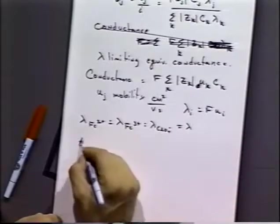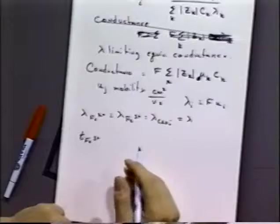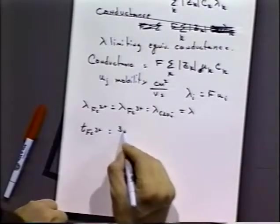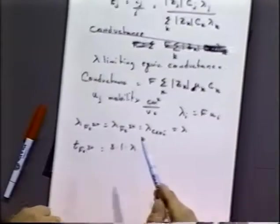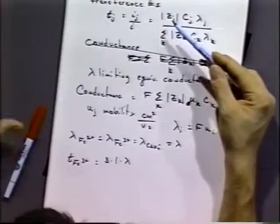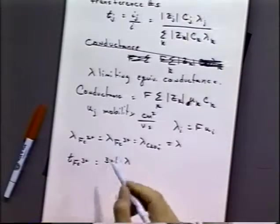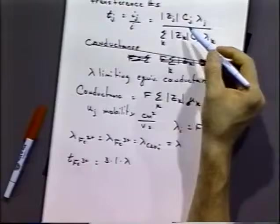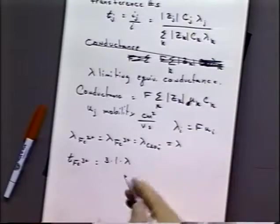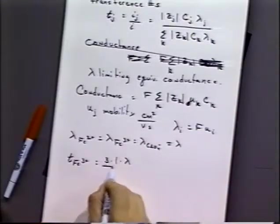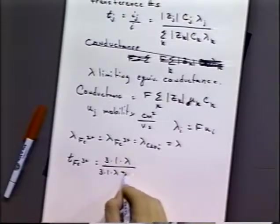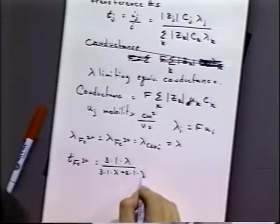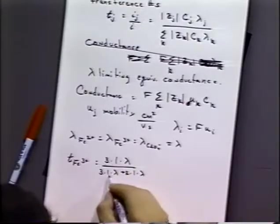So we can calculate the transference numbers of iron three plus, which would be three times one times lambda. We've got a three plus species, so that's the absolute value of the charge times the concentration, let's just say that's one millimolar, and lambda, which we don't know.